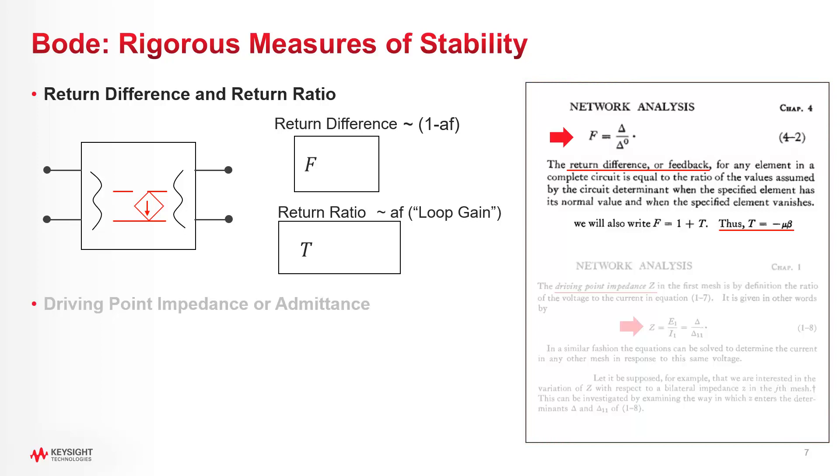Return difference comes about by studying the way gain, in our case transconductance, can introduce instabilities into a network. Bode realized that the analysis needs to be done directly at the internal gain source itself, and that's where he set his reference plane. He defined return difference across that reference plane as f, which is kind of analogous to the transfer function denominator we studied earlier. And then he defined return ratio t as the equivalent loop gain term. But you need to be a little careful when you're making comparisons, because he actually defined t as the negative of loop gain, which has led to a fair bit of confusion over the years.